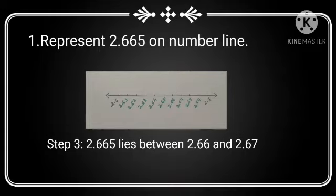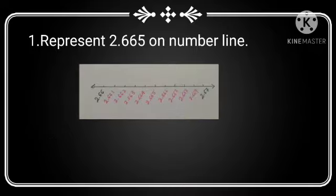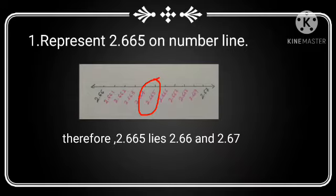In step 3, 2.665 lies between 2.66 and 2.67. In step 4, we get the required answer. Therefore, 2.665 lies between 2.66 and 2.67.